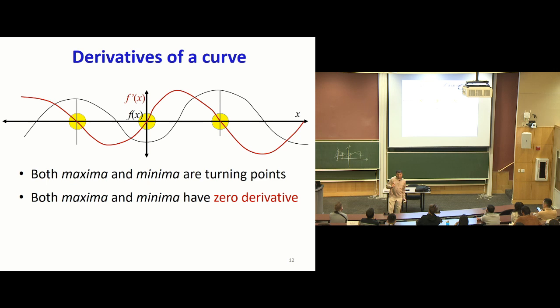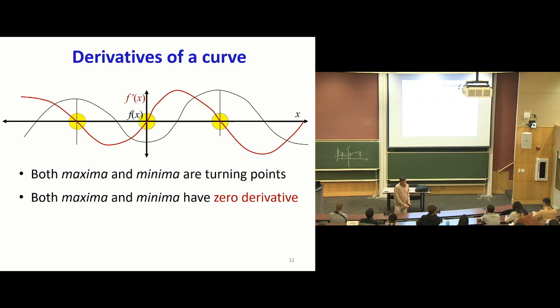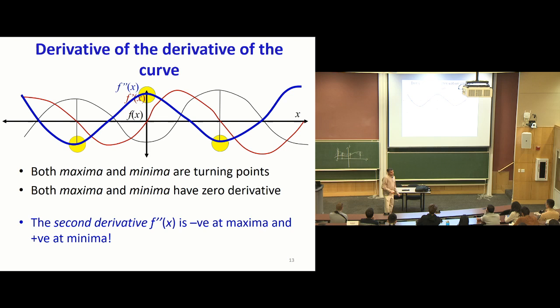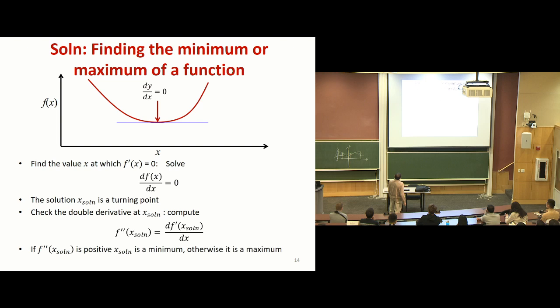There's one key difference. When going for a maximum, the slope is positive as you approach it, then becomes zero, then becomes negative. Going to a minimum, the slope is initially negative, then becomes zero, then becomes positive. So if you look at the second derivative — at a minimum, because the derivative is going from negative to positive, the second derivative is positive. At a maximum, it's the other case: the second derivative is going to be negative. So the way we were taught to find a minimum is to find the location where the derivative is zero and where the second derivative is positive.